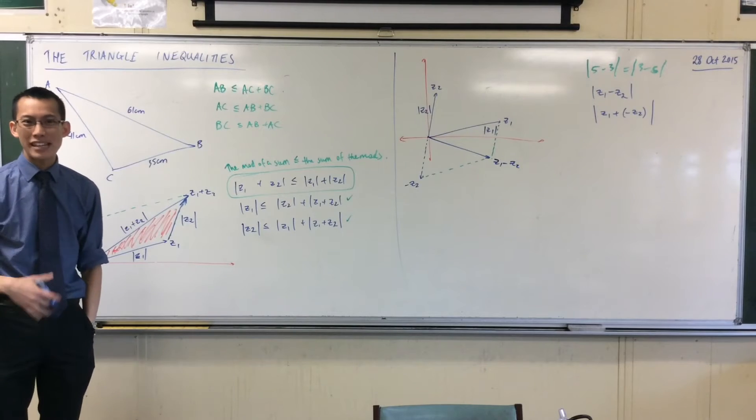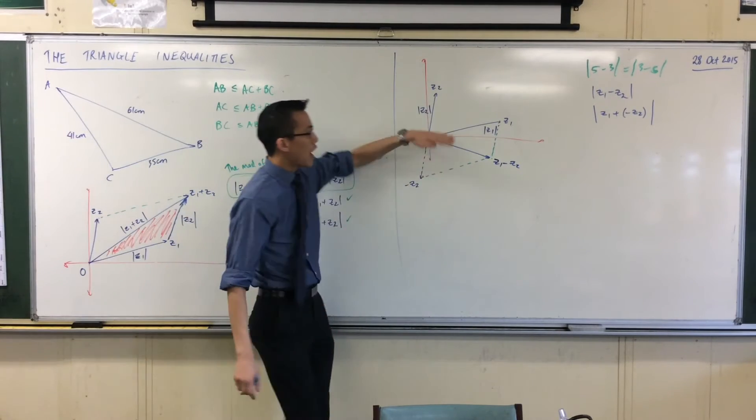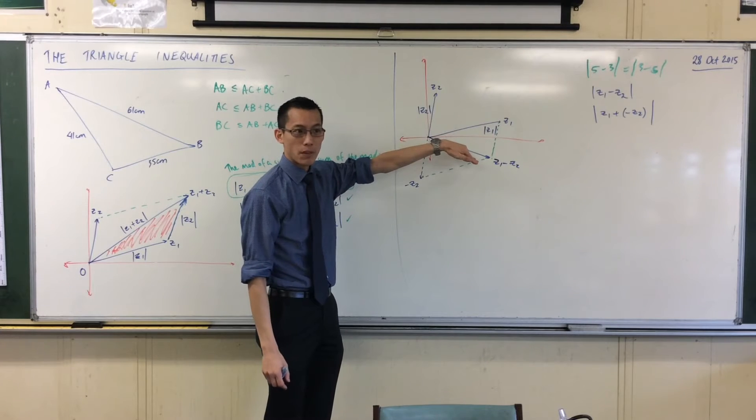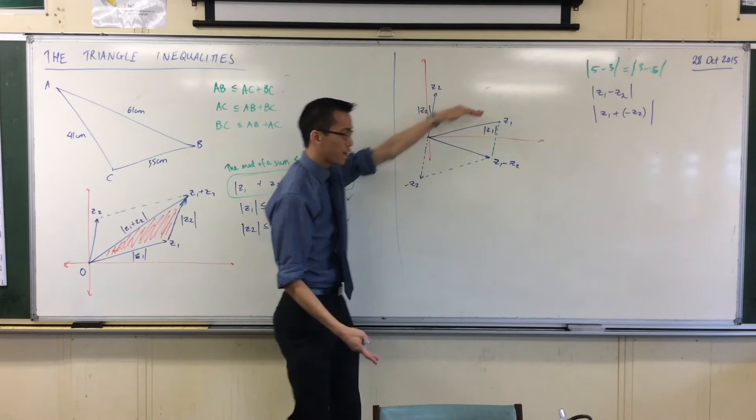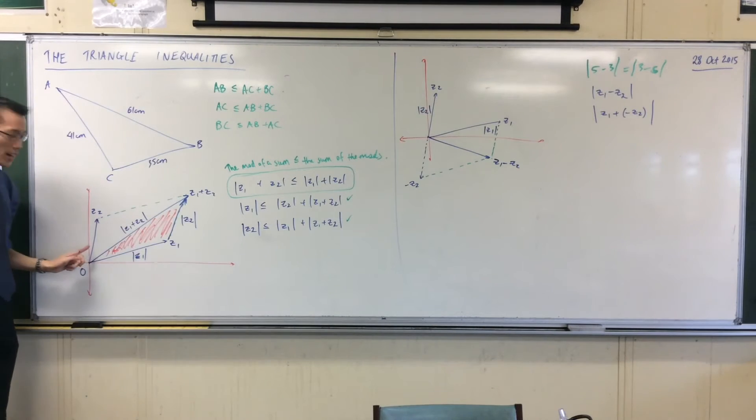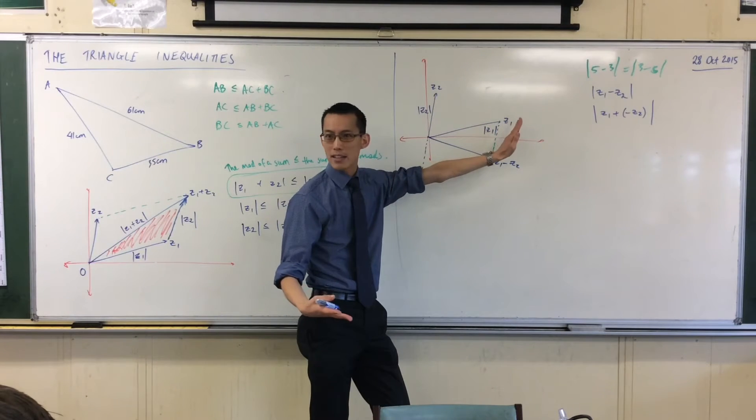But of course, to complete our triangle, you've got two choices. You can either take Z1 minus Z2, consider the free vector of that as this guy up here, or alternatively, you could do this trick that we had over here, consider the free vector of Z2 and move him over to here because they've got the same magnitude.